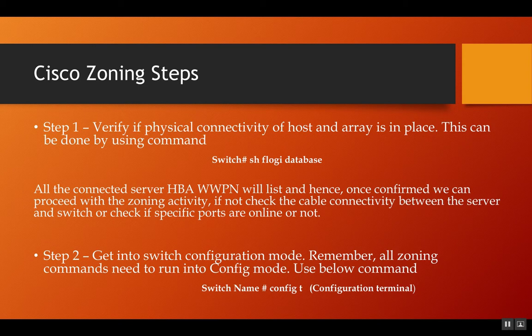Step 1 is to verify whether your WWNs are present on the switch or not. They will not be there if the devices have not been physically connected yet. To check this, you can use the command 'show flogi database', in which all connected server HBA WWN port numbers will be listed. If they are not present, check cable connectivity or whether your ports are online. If offline, bring them online with a 'no shutdown' command. If that doesn't work, there is a physical cable connectivity issue that your data center team needs to resolve.